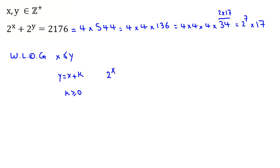If I replace 2 to the y, I write 2 to the x plus k equal to 2 to the 7 times 17. If we factor out 2 to the x and use the power rule, we get 2 to the x times (1 plus 2 to the k) equal to 2 to the 7 times 17.